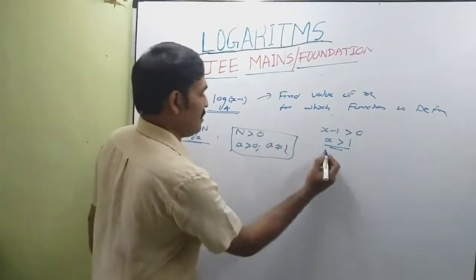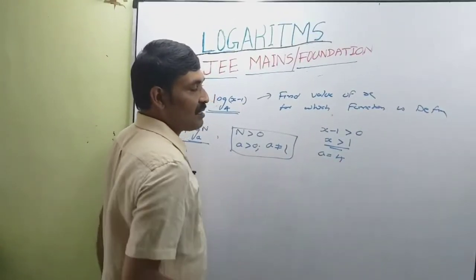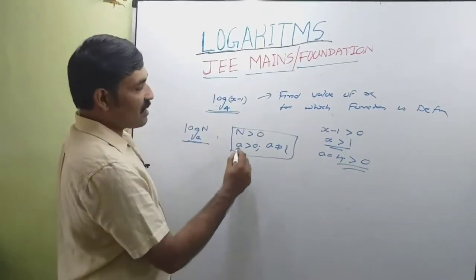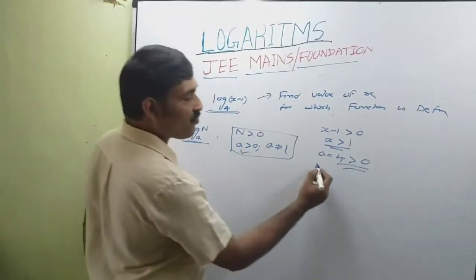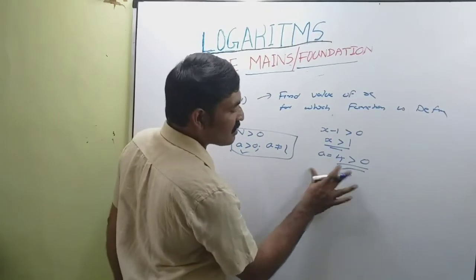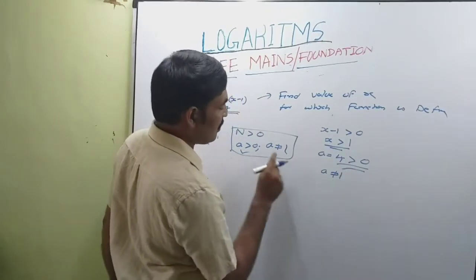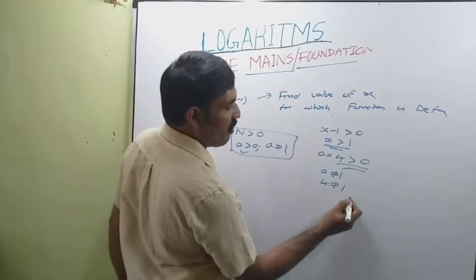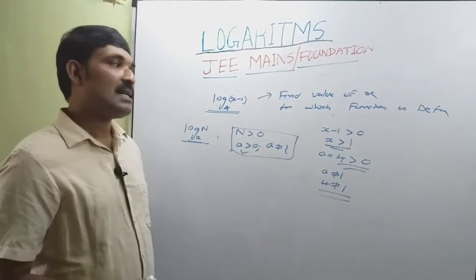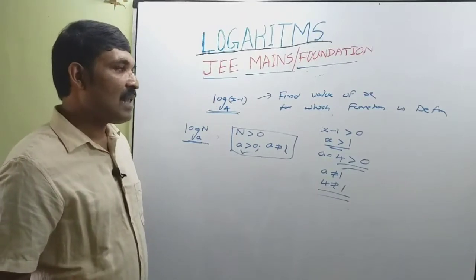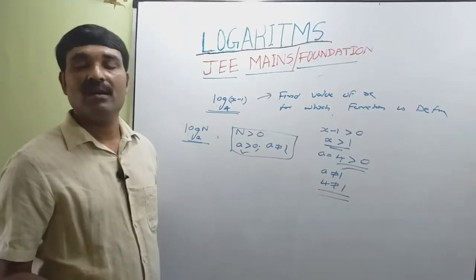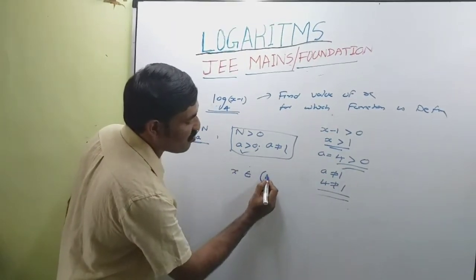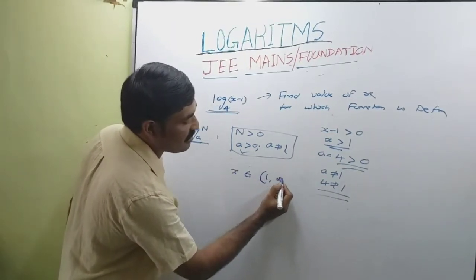The base here is a = 4, which is greater than 0 — second condition satisfied. And 4 ≠ 1 — third condition satisfied. So all conditions are met, and x > 1. Therefore x belongs to the open interval (1, ∞).